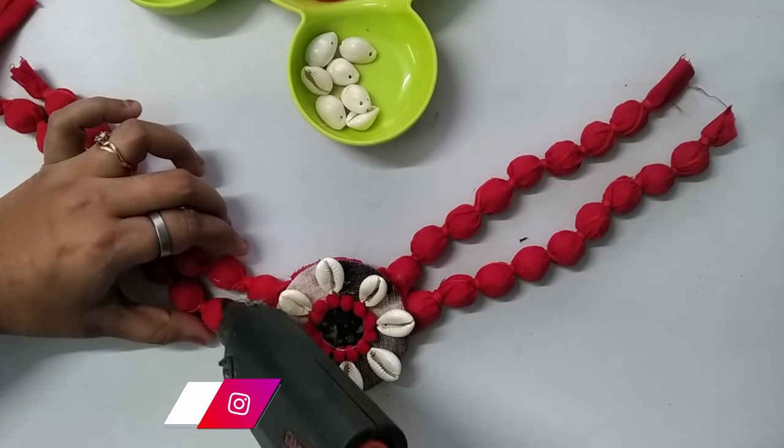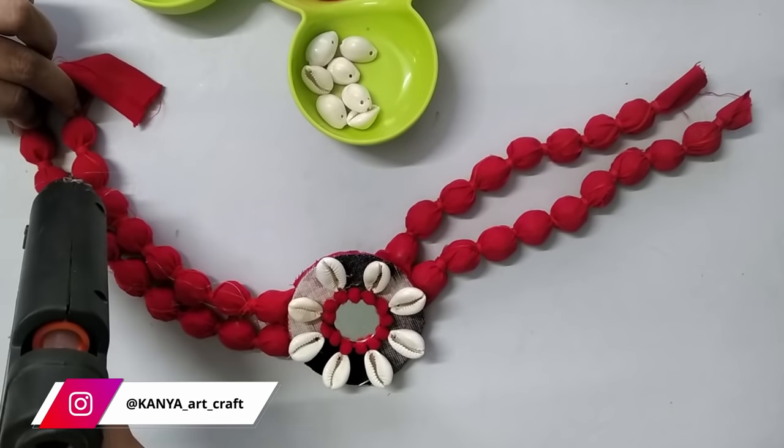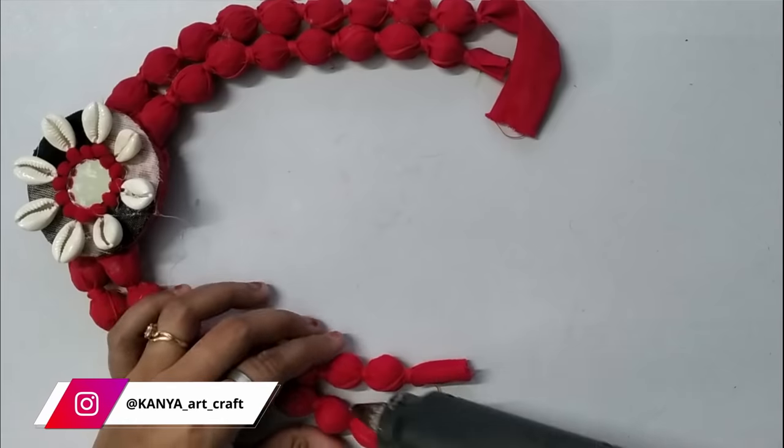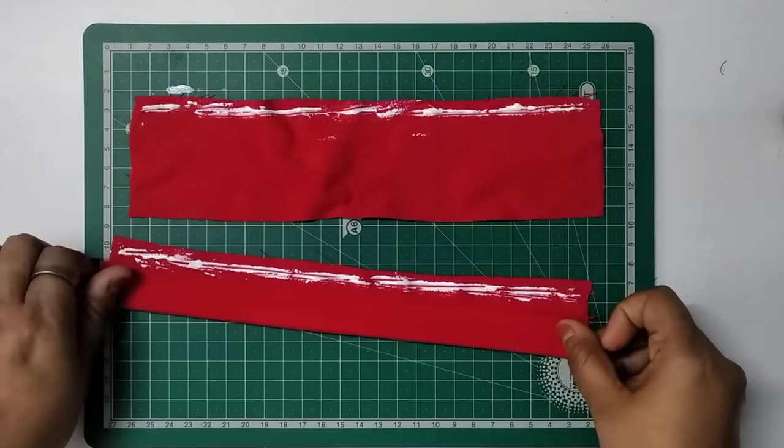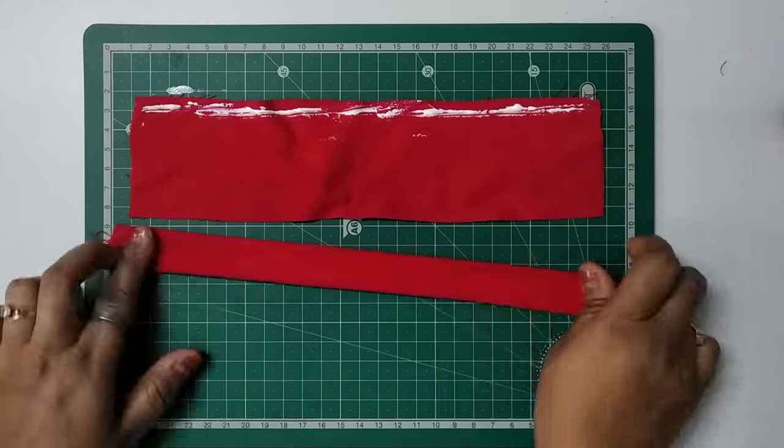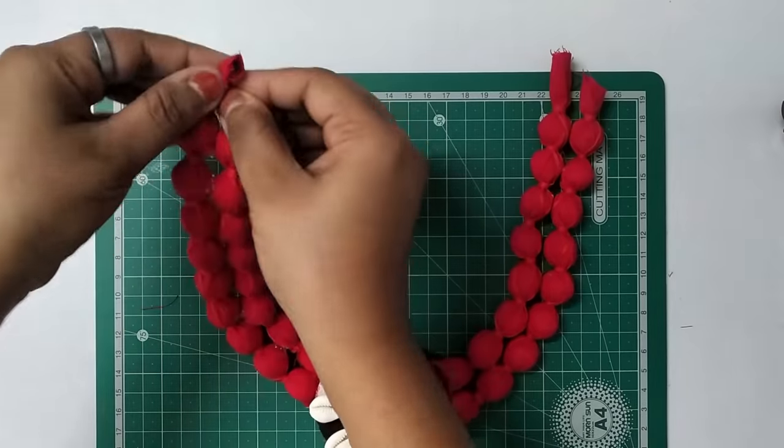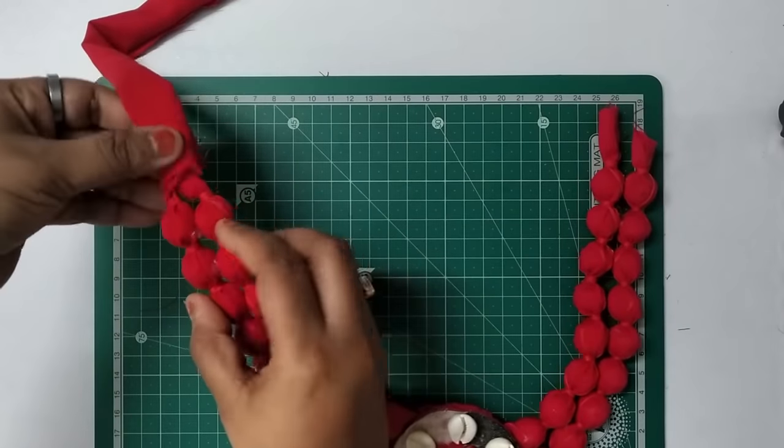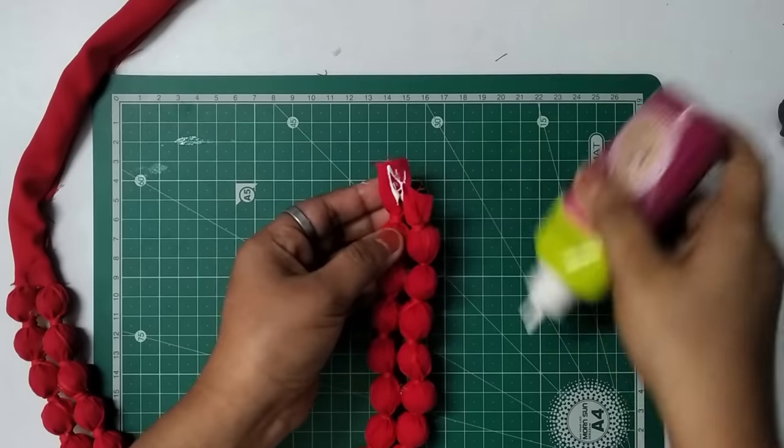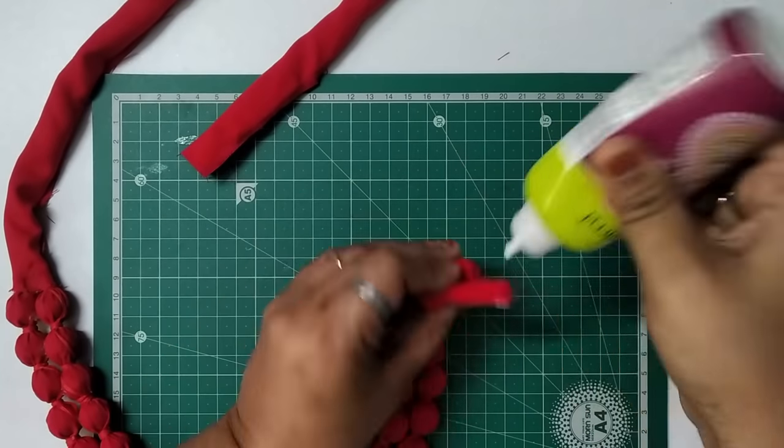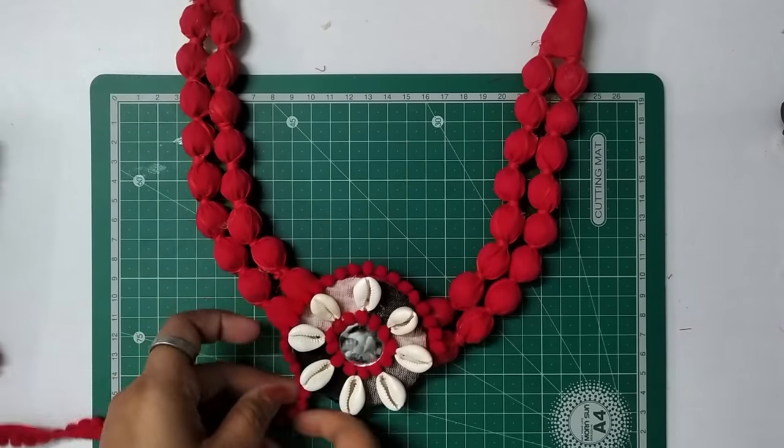Applying some glue in between this dory to stick them together and give it a shape. Again taking 2 pieces of fabric, applying glue on one side and rolling it twice to stick. Now sticking them on the edge of the jewelry like this using glue. So basically we are creating an arrangement for tying this jewelry from the back. Sticking this pom pom lace around the pendant.